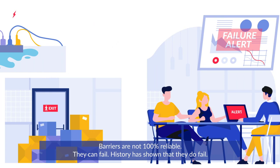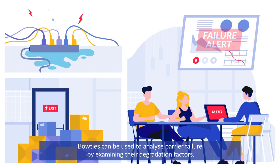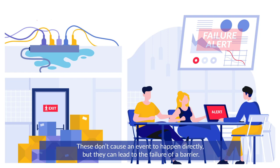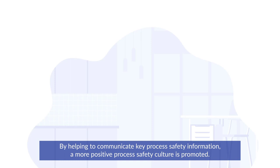Barriers are not 100% reliable. They can fail, and history has shown that they do fail. Bowties can be used to analyse barrier failure by examining their degradation factors. These don't cause an event to happen directly, but they can lead to the failure of a barrier.